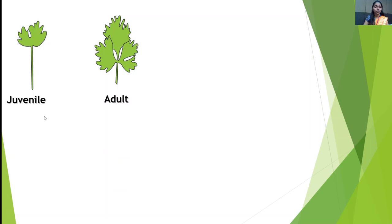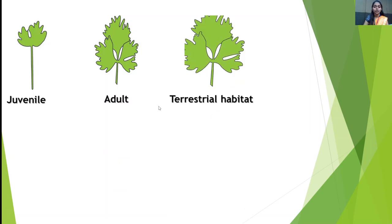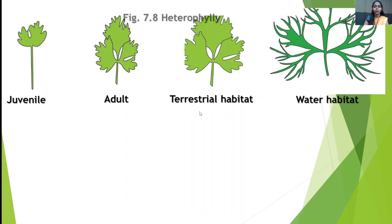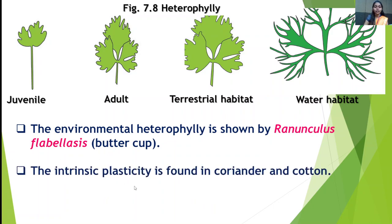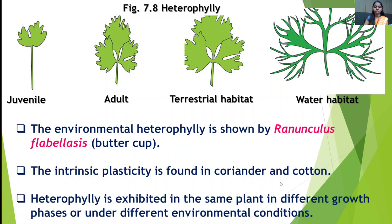The picture shows juvenile stage, adult stage, terrestrial habitat and water habitat — illustrating heterophylly. Environmental heterophylly is shown by Ranunculus flabilis, commonly called buttercup. Ranunculus is the genus and flabilis is the species. Intrinsic plasticity is found in coriander and cotton. Heterophylly is exhibited in the same plant in different growth phases or under different environmental conditions.